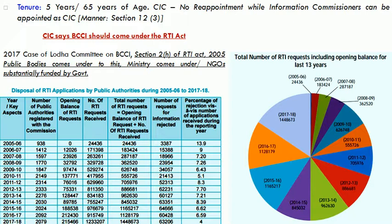In 2017 news, the Chief Information Commissioner said that BCCI should come under the RTI Act. The RTI Act talks about what public bodies come under a ministry, and NGOs that are substantially funded by the government — in that case they have to disseminate information. So any citizen of India can ask anything from the BCCI also under this provision.